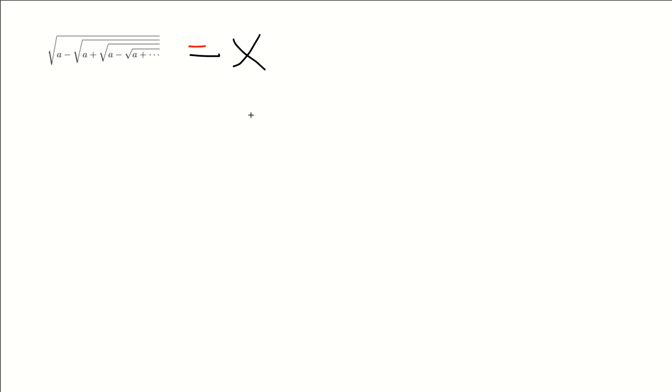So a nice trick that we can do here is we can define another variable very similarly. It's basically the same alternating nested radical, except instead of starting from a negative, we're starting from a positive. So then we can define this to be y.